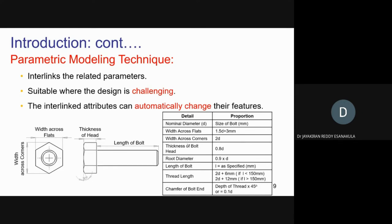The thickness of the head is dependent on 'd', the width across the flats is dependent on 'd', and width across corners is also dependent on 'd'. However, the length of the bolt is not dependent on 'd' — it is independent. So to model a hexagonal bolt, you need the nominal diameter 'd' and the length 'l'. Having these two values, we can model any hexagonal bolt.